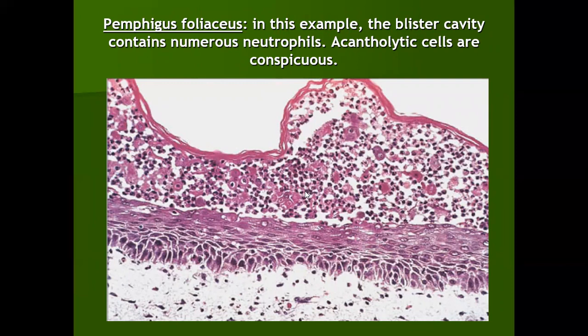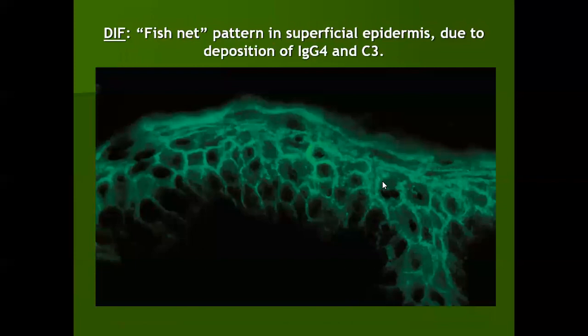If a similar picture is seen without acantholytic cells, then we would call it subcorneal pustular dermatosis. We always try to do immunofluorescent studies whenever we take a biopsy for immunobullous disorders. If we take a perilesional biopsy in a patient of pemphigus foliaceous, there will be deposition of IgG, mainly IgG4, and C3 between the keratinocytes, resulting in a fishnet appearance, but this fishnet appearance will be seen only at the top layer of the epidermis.